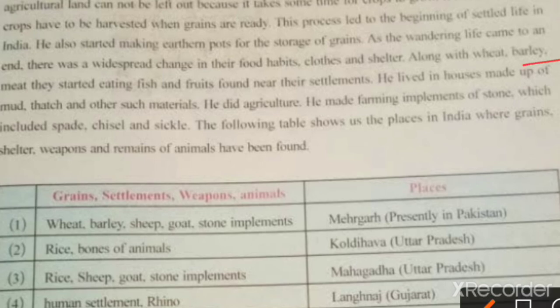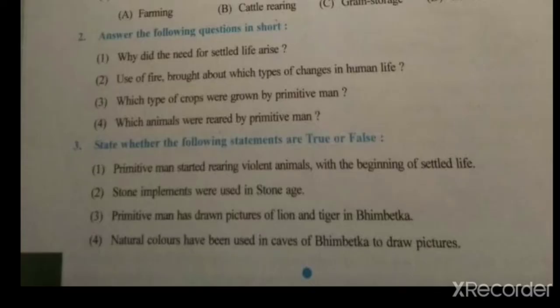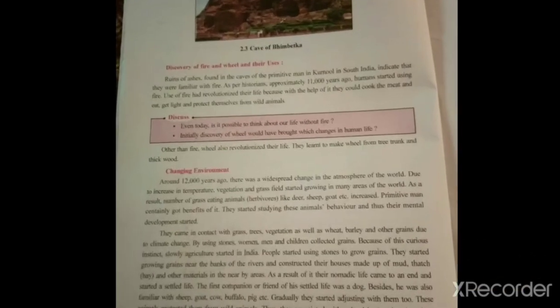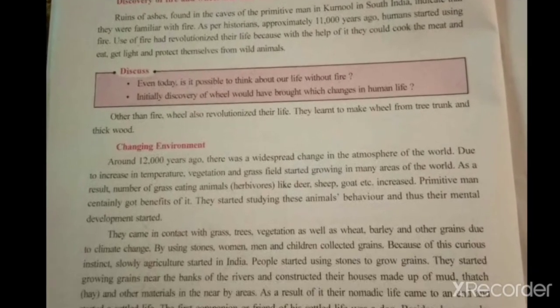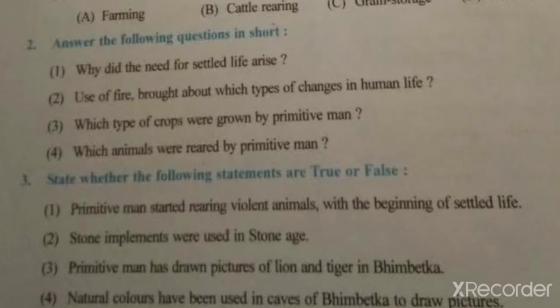The crops grown by primitive man were barley and wheat. Now, which animals were reared by primitive man? The answer is: they reared sheep, goat, deer, and buffalo. These were the animals kept by primitive man.